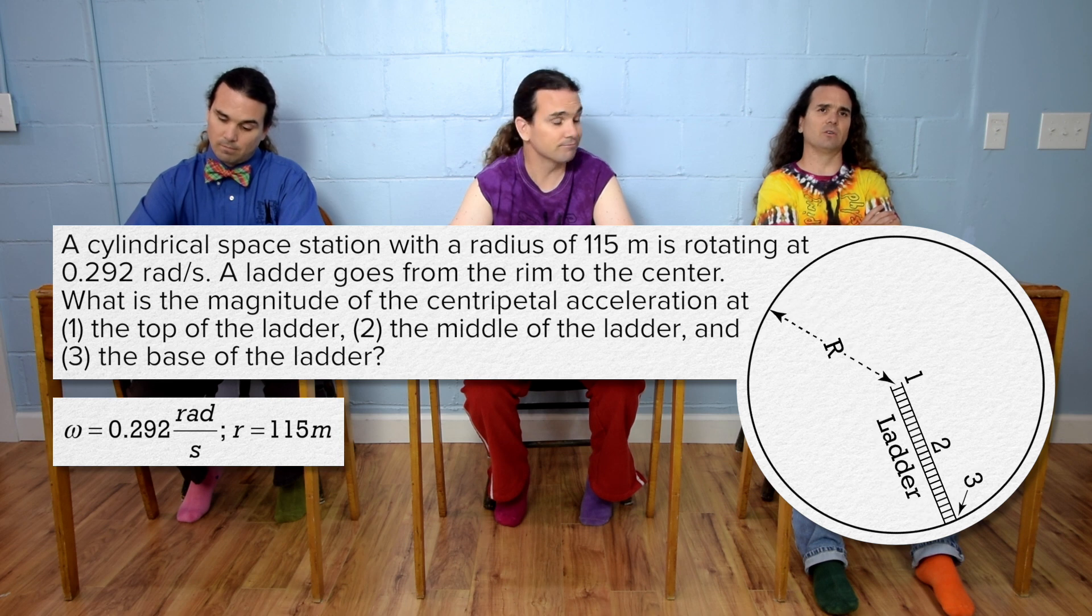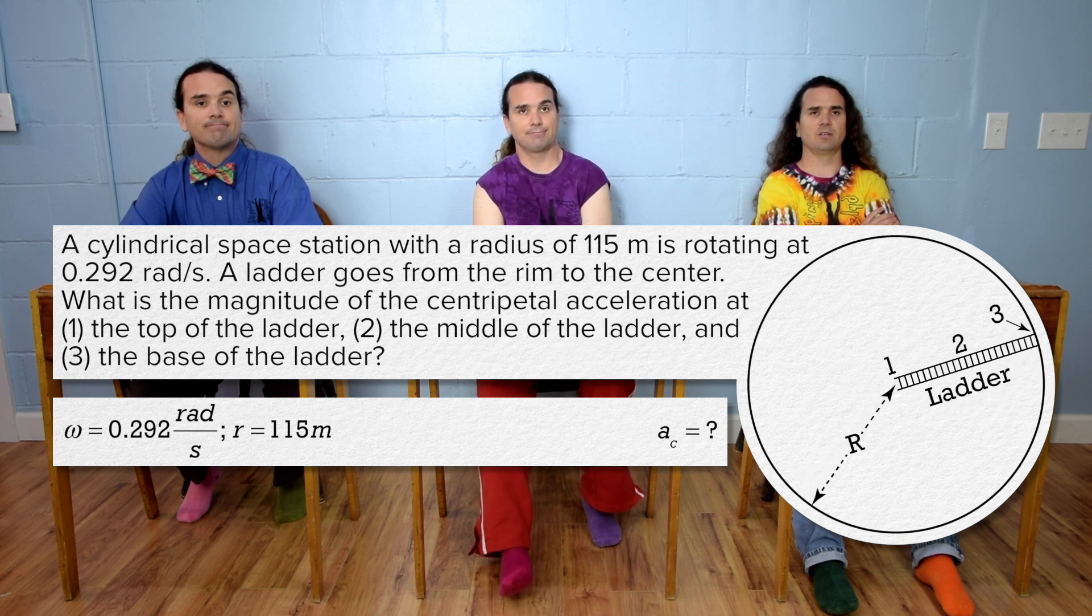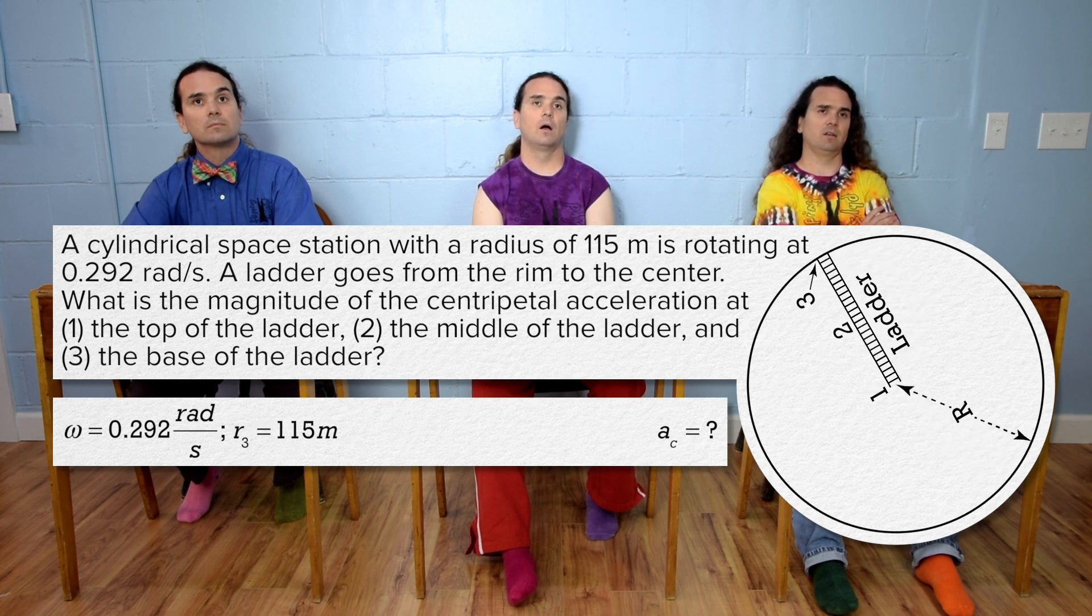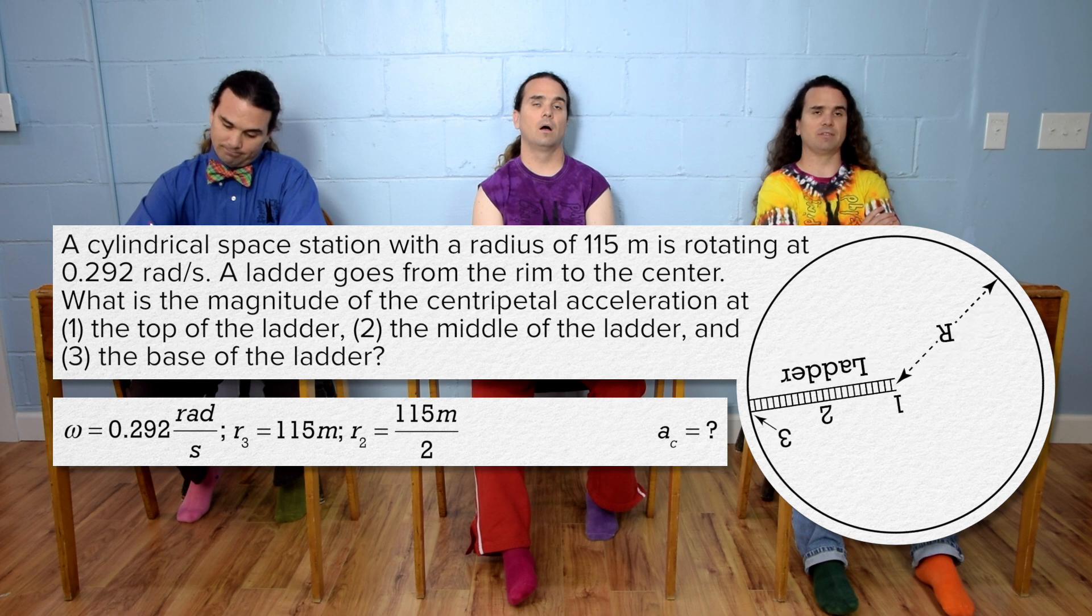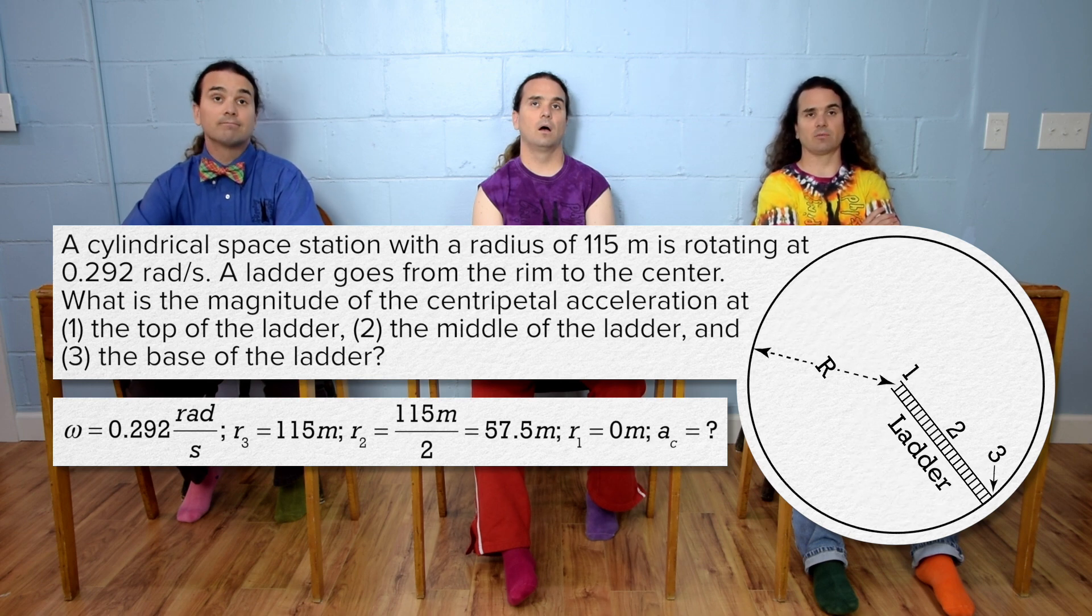Okay, so centripetal acceleration equals question mark for each of those locations. The radius I gave before of 115 meters is for part 3. The radius for part 2 is halfway up the ladder, or 115 divided by 2, which is 57.5 meters. And the radius for part 1 is 0.